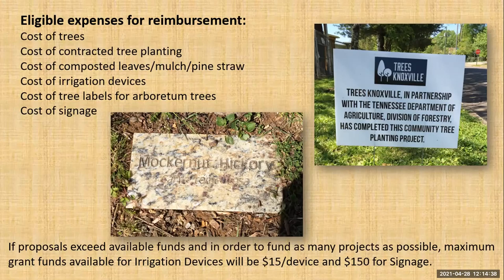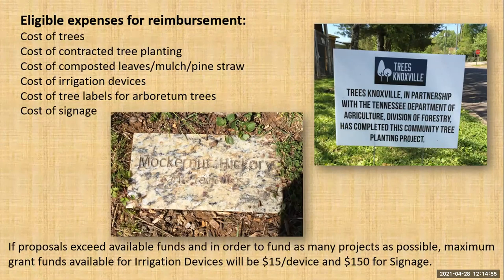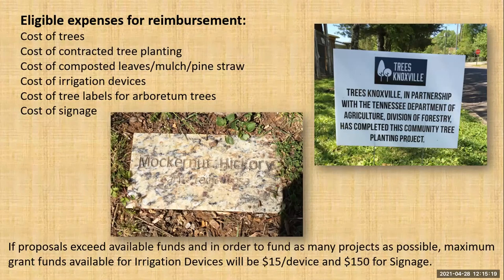Eligible expenses for reimbursement are the cost of the trees, and if your city or town does not have a parks and rec department or people to plant those trees, the cost of contracted tree planting. We also cover the cost of mulch — though I actually advise composted leaves, pine straw, or pine bark, something that will allow water to soak into your root zone rather than roll off. We require that trees are irrigated for the first three years, so irrigation devices are covered. If you're developing an arboretum, we can cover the cost of tree labels and signage.